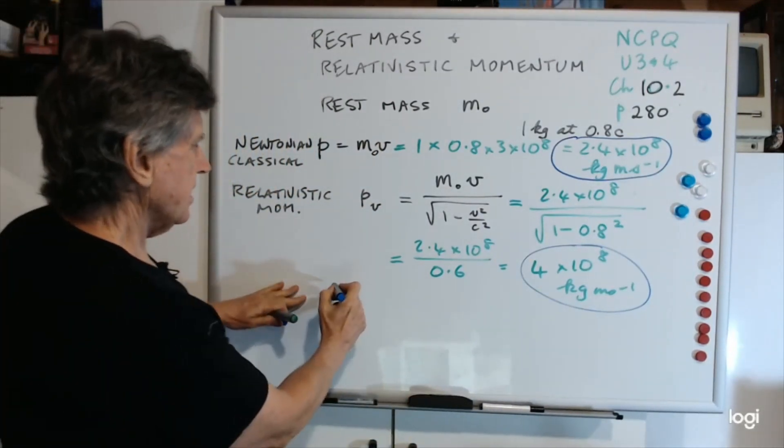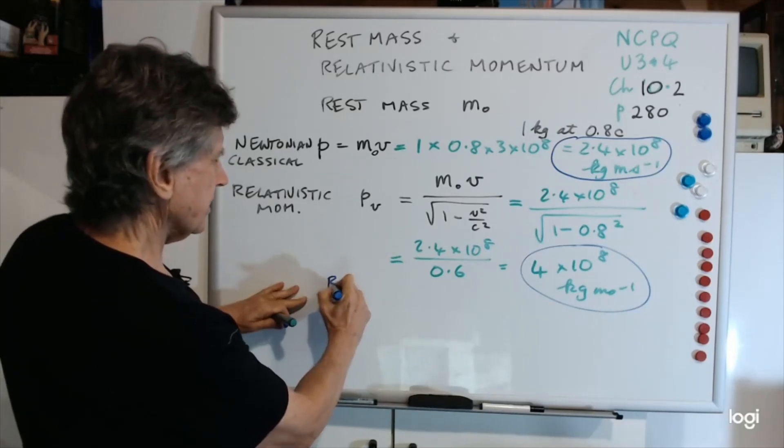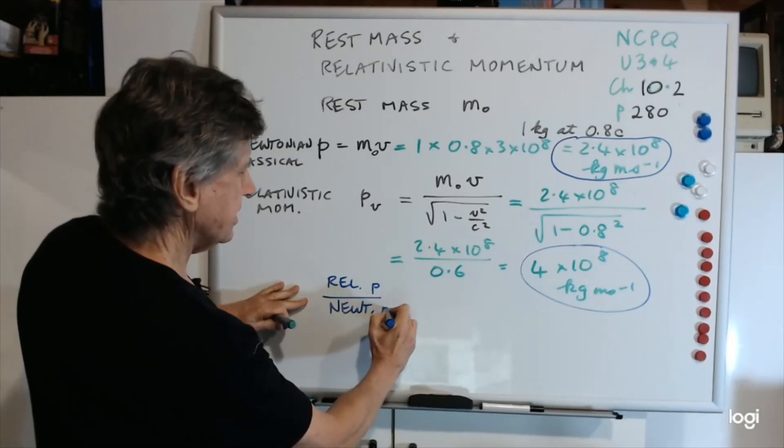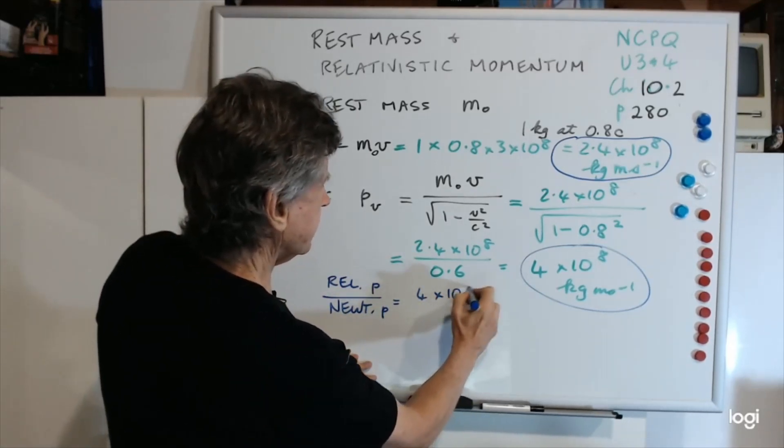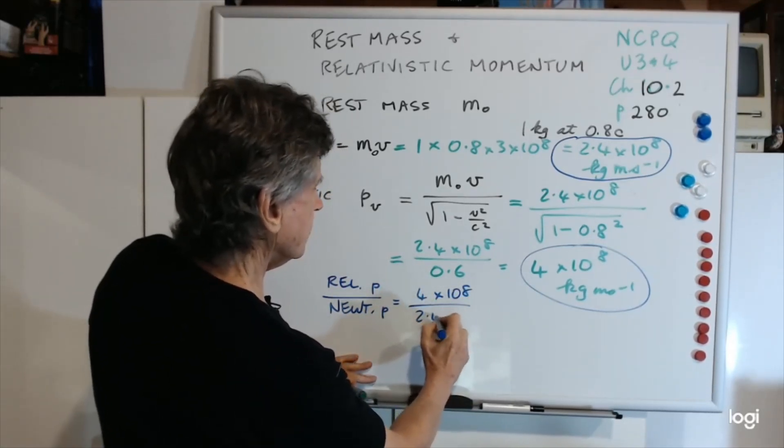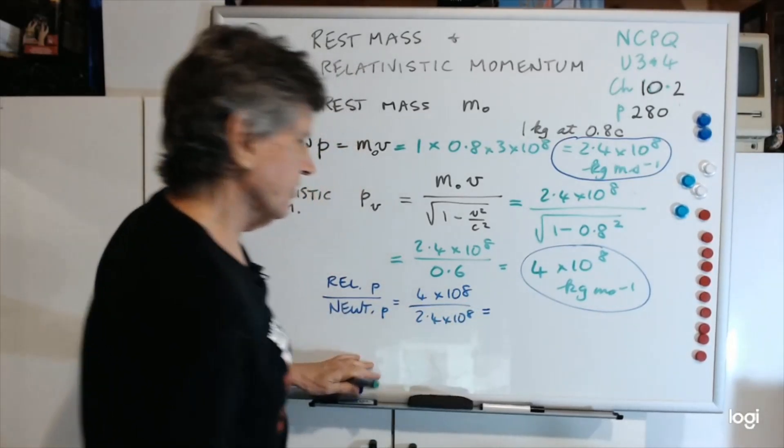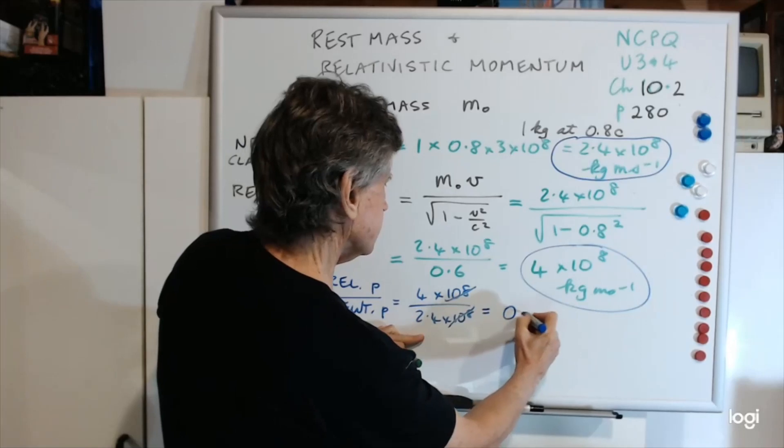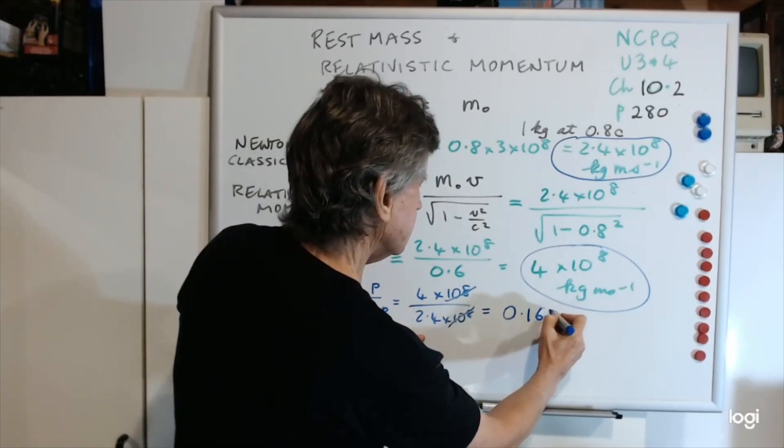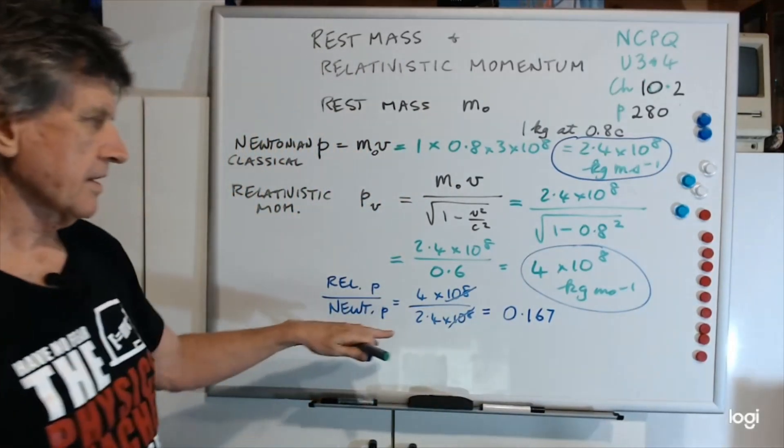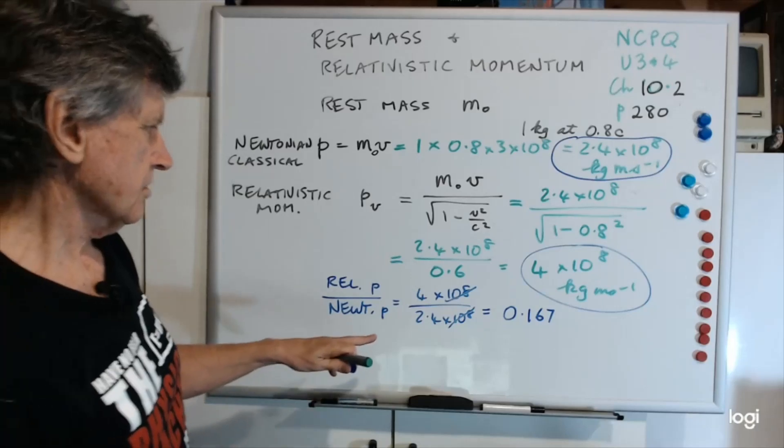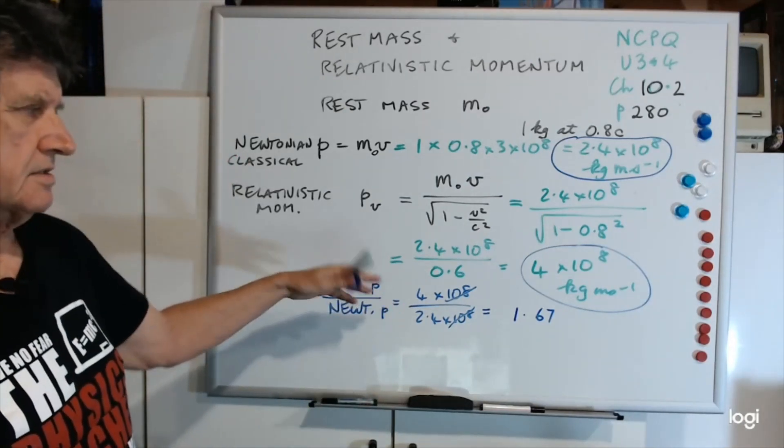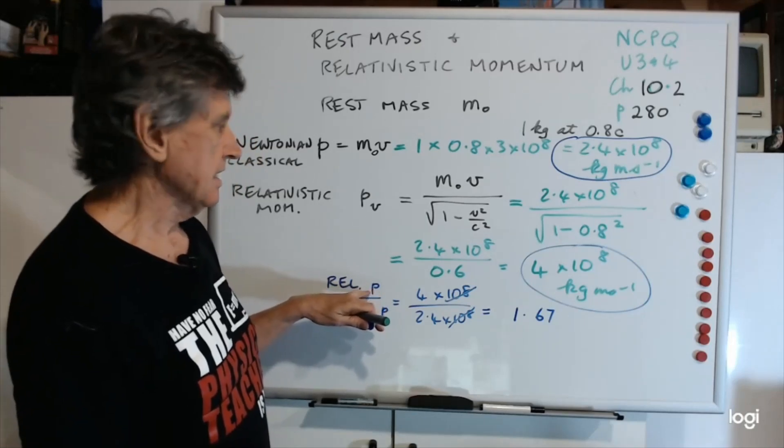Typically the question would say, what's the ratio of the relativistic momentum pv over the Newtonian p? That would be 4 by 10 to the 8 over 2.4 by 10 to the 8. The 10 to the 8's cancel out. That comes to about 1.67. So it's about 1.67 times greater when it's relativistic.